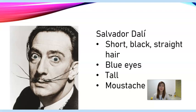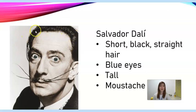Finally, here we have a picture of a very famous painter. He is not alive anymore — he passed away a long time ago, but he is very famous and has very famous paintings. His name is Salvador Dalí. He was a Spanish painter and he has a very funny face. He has short, black and straight hair, and he has blue eyes. He is also a very tall man. And look — he has a very funny mustache!